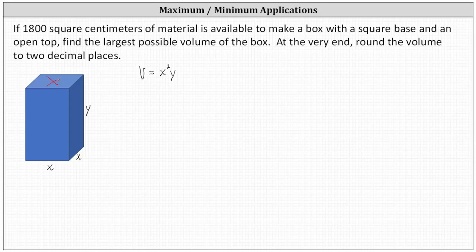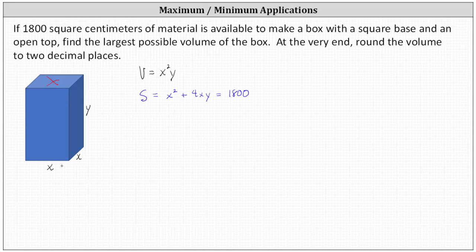The area of the base is equal to x times x, or x squared, and the remaining four faces have an area of xy square centimeters. Therefore the constraint is the surface area S, which is equal to x squared plus 4xy equals 1,800. Because we're not counting the top, each of the four faces has an area of xy, giving us x squared plus 4xy for the surface area, which equals 1,800.